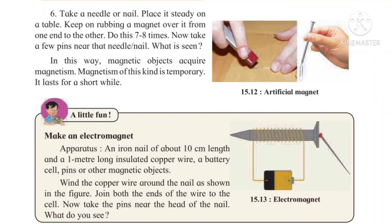Why does this happen? Electric current passes through the wire, and because of that electric current, magnetism is generated in the nail. The nail behaves like a magnet. That is why it is called an electromagnet — because electric current generates the magnetism, causing the pins to stick to the nail.